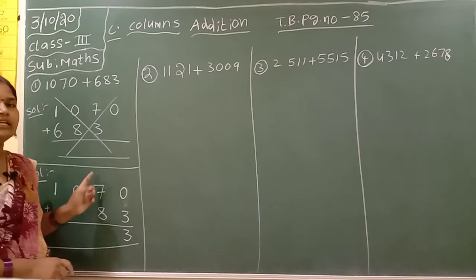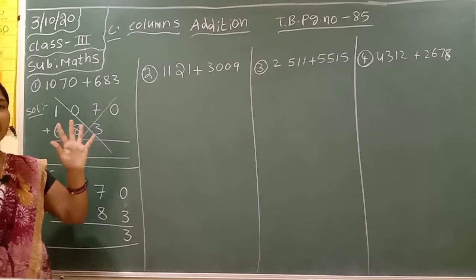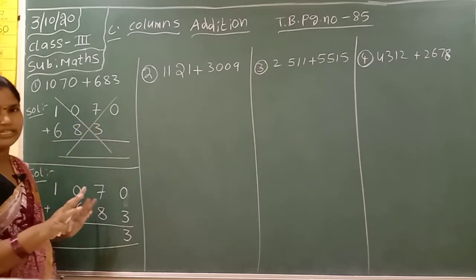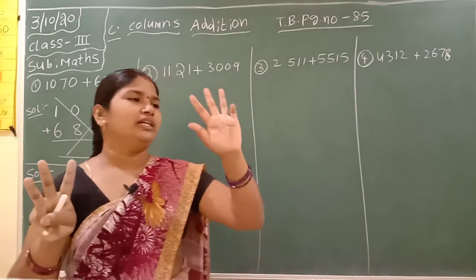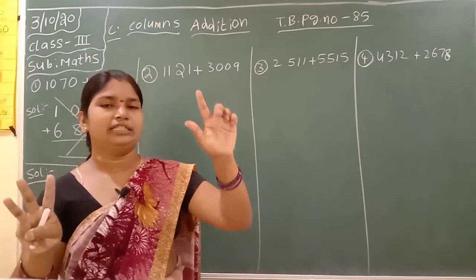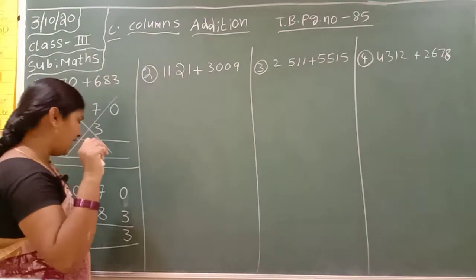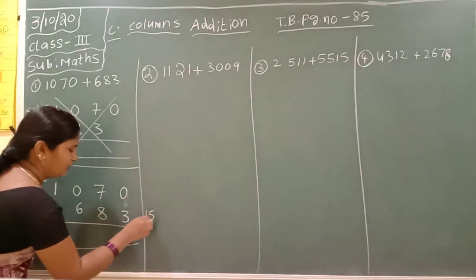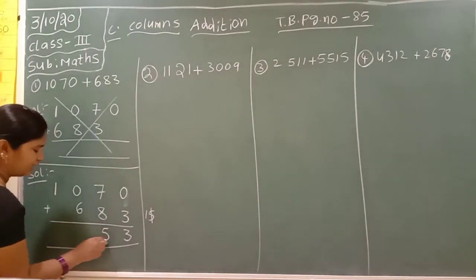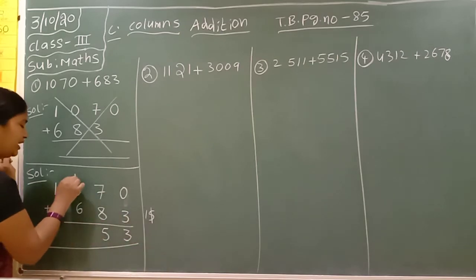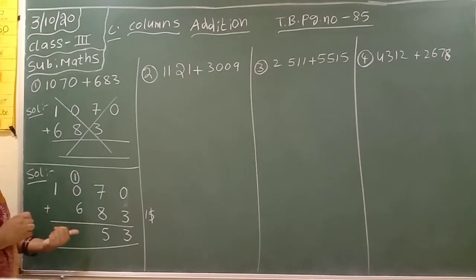Seven plus eight. Seven in the mind, take eight fingers. Seven after: eight, nine, ten, eleven, twelve, thirteen, fourteen, fifteen. The answer is 15. Don't write 15 directly here — you have to write to the side. One's place number write here, next number write down as a regrouping, means carrying number to the before place value. That is hundreds place. One's place: seven. Next, one only in the thousands place — here any number is not there, so you write down one directly. Our answer is 1753.